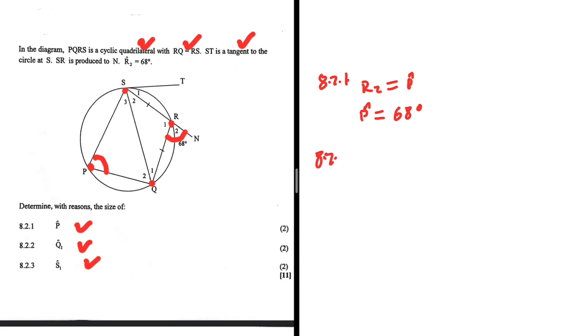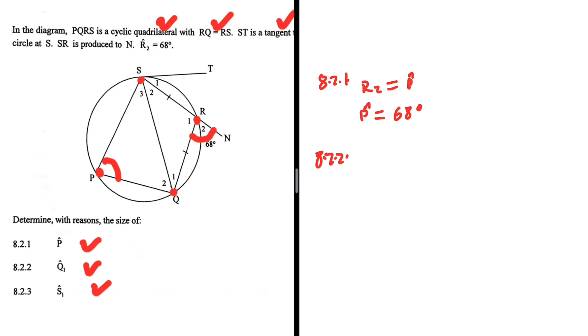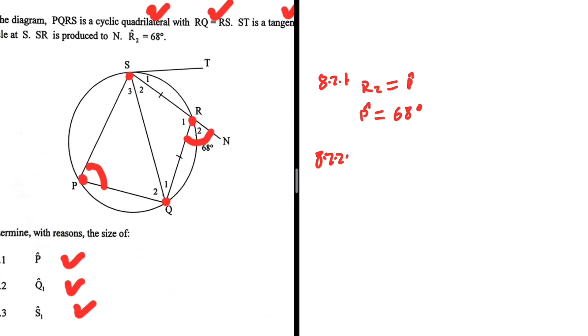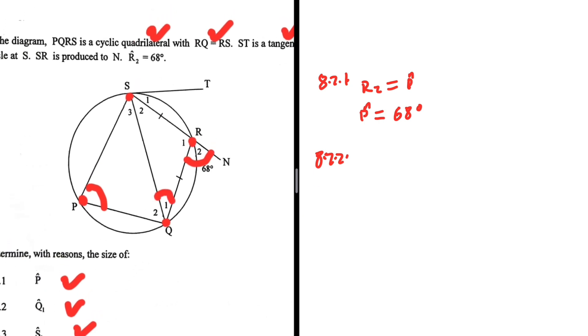Let's do 8.2.2. Determine with reasons the size of angle Q1. Q1 is this angle here. And we are going to answer that question using our second keyword. The second keyword, RQ equals RS. So let's see how we can use that.